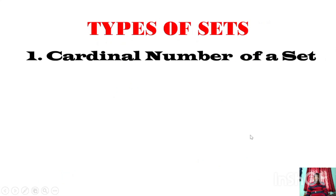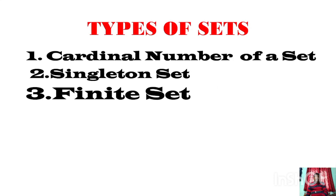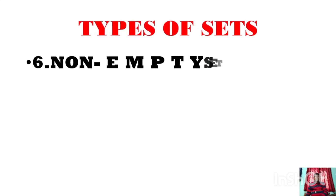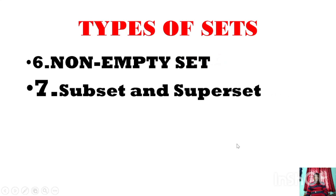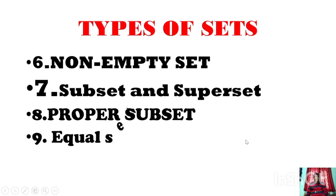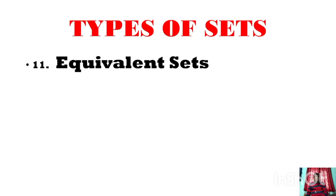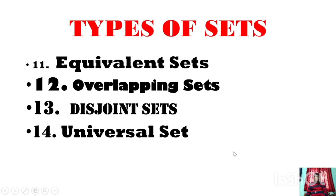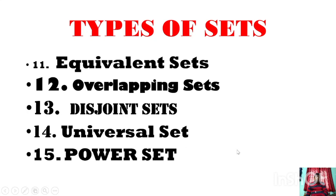In the following points I am going to discuss the different kinds of sets: cardinal number of sets, singleton set, finite set, infinite set, empty set or null set or void set, non-empty sets, subset and superset, proper subset, equal set, unequal sets, equivalent sets, overlapping sets, disjoint sets, universal set, and power set. These are the most fundamental concepts of set theory, which cover the entire part of the set, along with suitable examples and Venn diagrams.